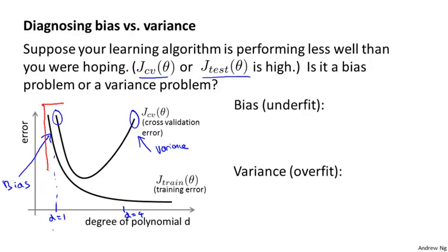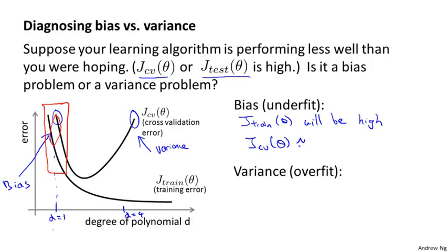Concretely, for the high bias case — the case of underfitting — what we find is that both the cross-validation error and the training error are going to be high. So if your algorithm is suffering from a bias problem, the training set error will be high, and the cross-validation error will also be high — maybe just slightly higher than the training error. If you see this combination, that's a sign your algorithm may be suffering from high bias.